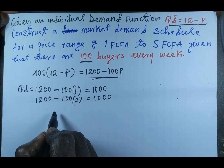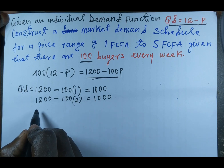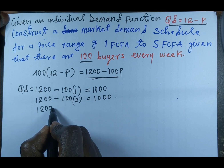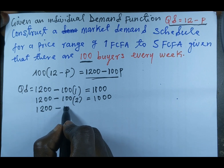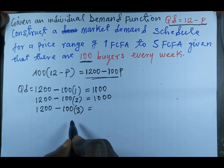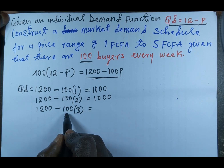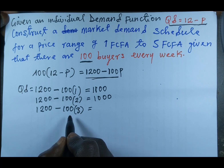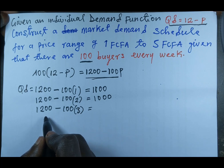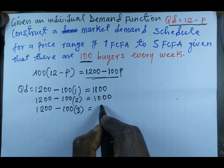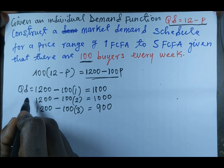When price increases to 3 FCFA, we have 1200 minus 100 × 3. That gives us 100 × 3 = 300, so 1200 − 300 = 900 as quantity demanded.